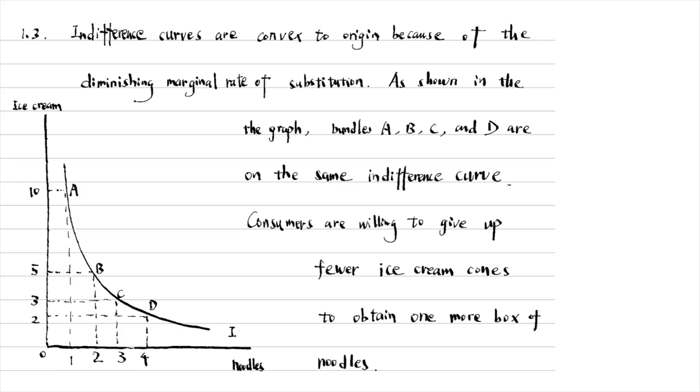When she has three ice cream cones and three boxes of noodles at C, she's willing to give up one ice cream cone for one more box of noodles. As we move down and to the right along the indifference curve, the consumer will give up fewer of a good for one more unit of the other.